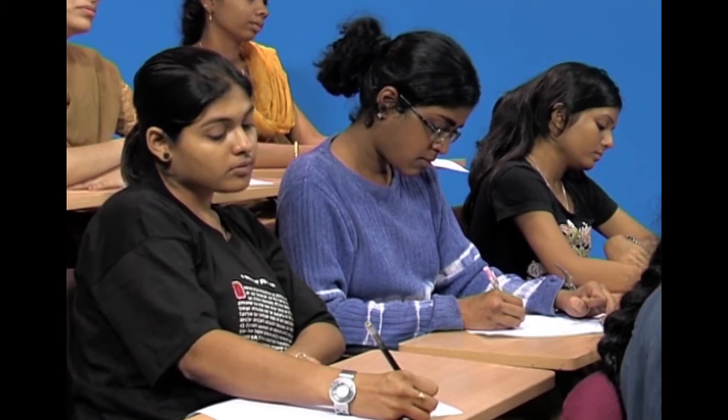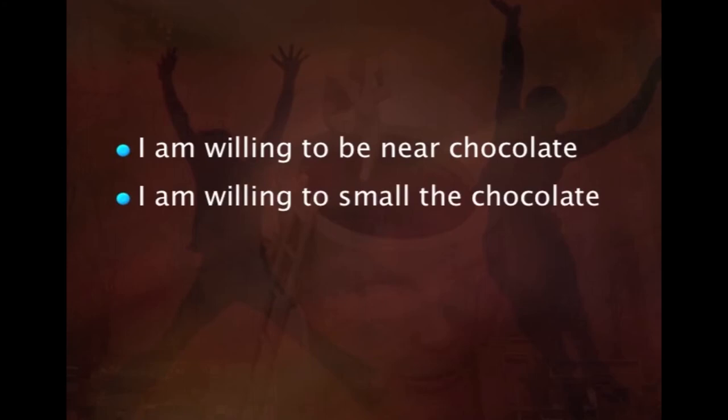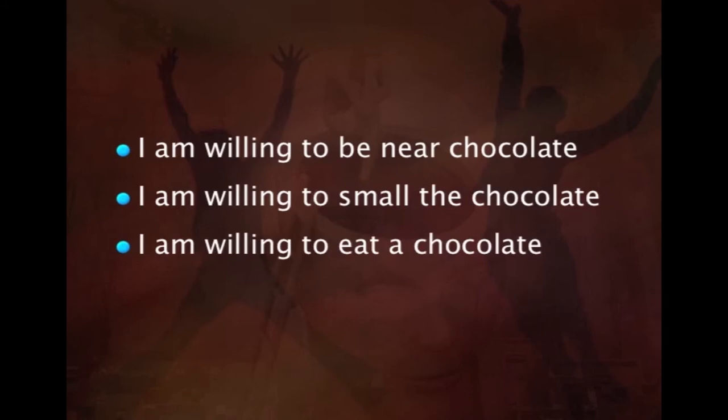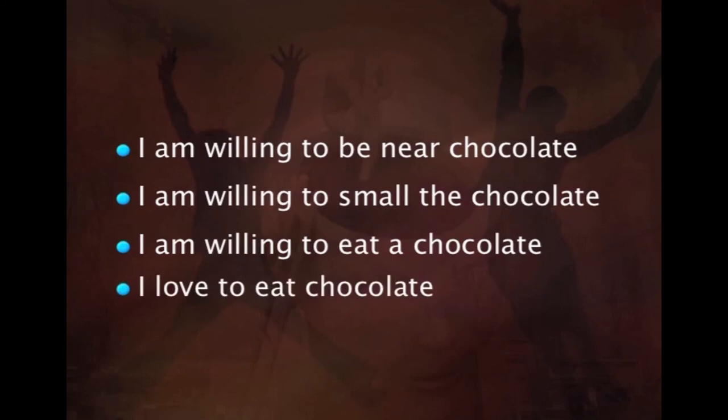In the Guttman scale, the unidimensional set of items is ranked in order of difficulty, from least extreme to most extreme positions. For example, to measure the attitude towards chocolate, the researcher can frame statements as follows: the first would be 'I am willing to be near chocolate,' the second 'I am willing to smell the chocolate,' the third 'I am willing to eat a chocolate,' and the fourth 'I love to eat chocolate.' Under unidimensional statements, there is a hierarchy of exposure to a particular attitude formation or measurement. Therefore, these four items have a relationship with one another while measuring the attitude towards chocolate.